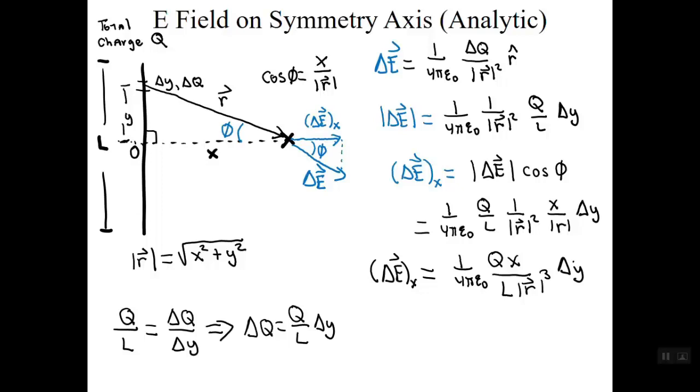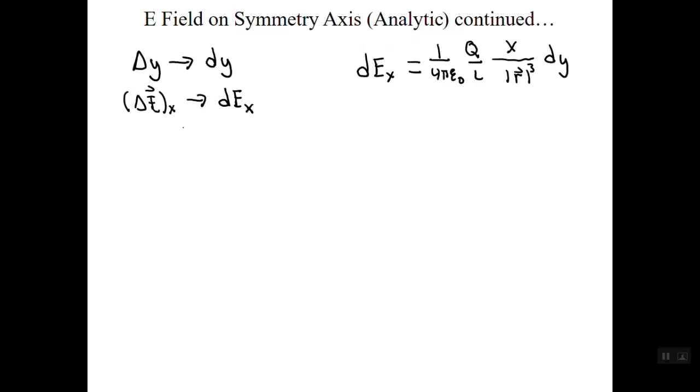We're now in a position to do the final step. Sum up all the E field contributions of all the pieces that make up the rod. We're going to pass over to the limit of very small pieces. So, delta Y goes over to dY and delta E sub x goes over to dEx, the x component of an infinitesimally small piece of charge rod of length dY. We're also going to now insert explicitly the expression for the magnitude of the vector R. We now will integrate over Y to sum up all the contributions. We integrate from the bottom end of the rod at Y equals minus L over 2 to the top end of the rod at Y equals L over 2.